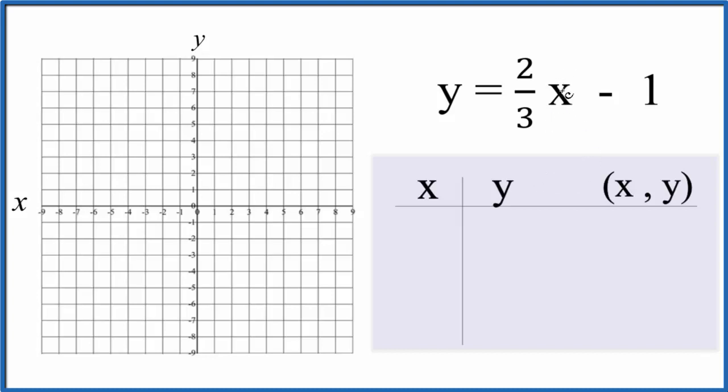We can put values in for x. A good place to start is always zero. So two-thirds times zero, that's just zero. Zero minus one is minus one.